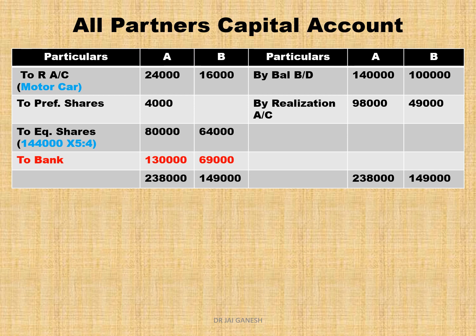Equity shares are distributed in the ratio of 5 to 4 as mentioned in the question. Then we write the final settlement: payment to A is Rs. 1,30,000 and to B is Rs. 69,000.